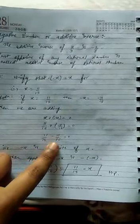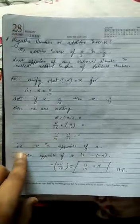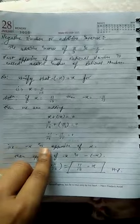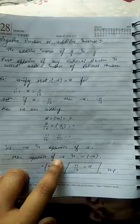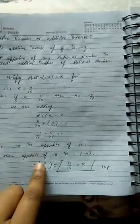Now 11 upon 15 and 11 upon 15 is the same digit but opposite sign, so it will be 0. That means minus x is opposite of x. Then opposite of minus x is minus of minus x, which is minus of minus 11 upon 15 equal to 11 upon 15.